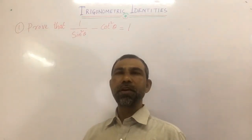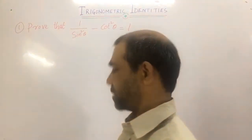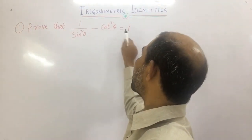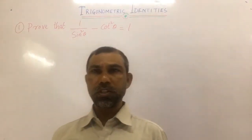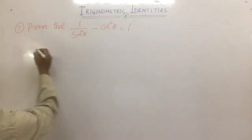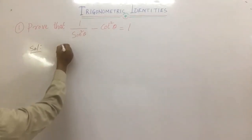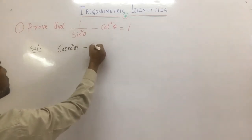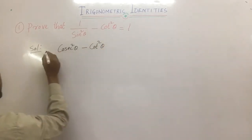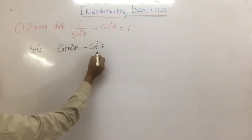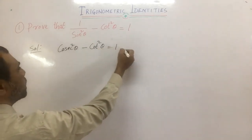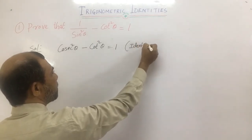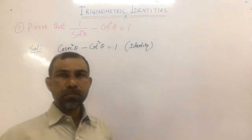Now let us solve some problems based on the trigonometric identities. First question: Prove that 1/sin²θ − cot²θ = 1. This is a very simple question. We know that 1/sin²θ is cosec²θ, so we write cosec²θ − cot²θ, and by the identity, cosec²θ − cot²θ = 1. This is proved.